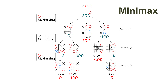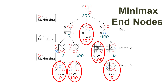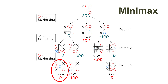Each board will have a value. Let's start from the end nodes of a game tree. When a game is ended there are only three possibilities: if there's a draw the game will have a value of zero. Remember O is the maximizing player — if O wins the game the board will have a value of 100. If X wins the game the board will have a value of negative 100.